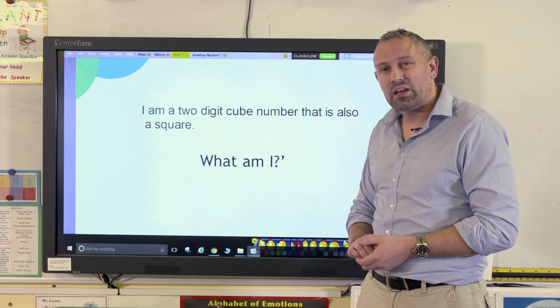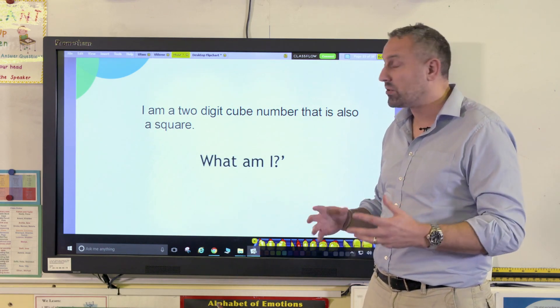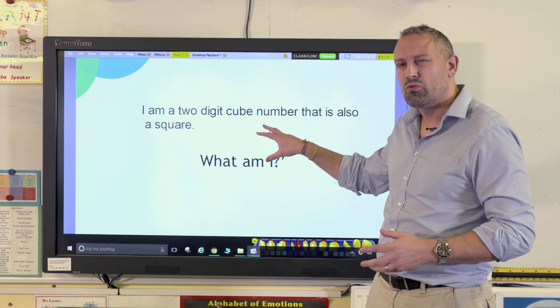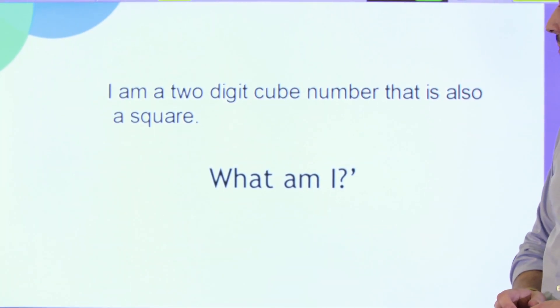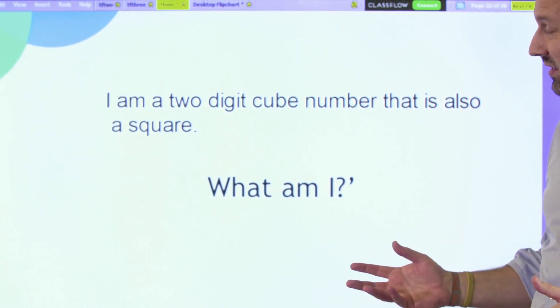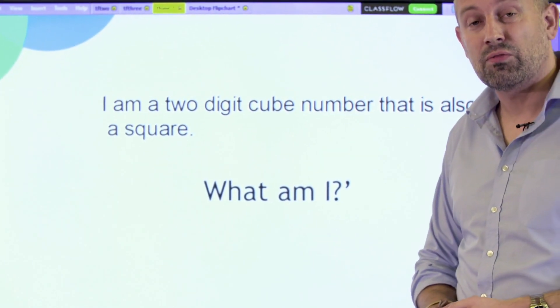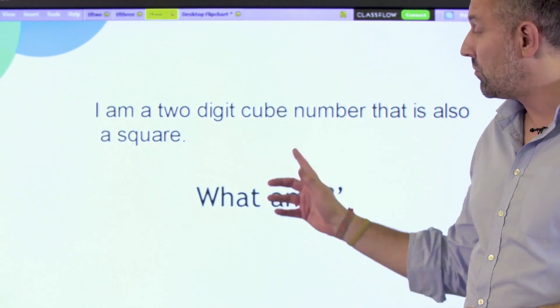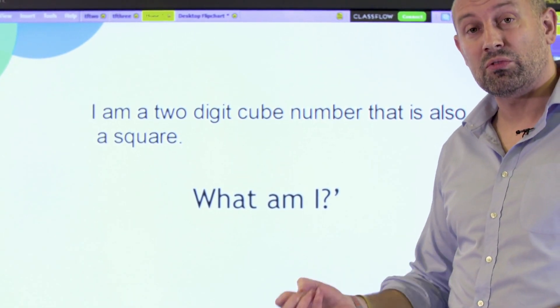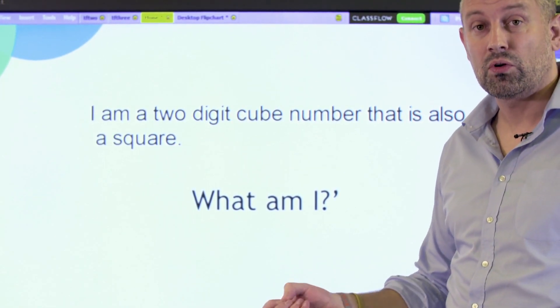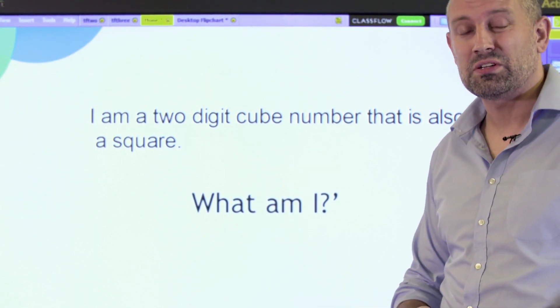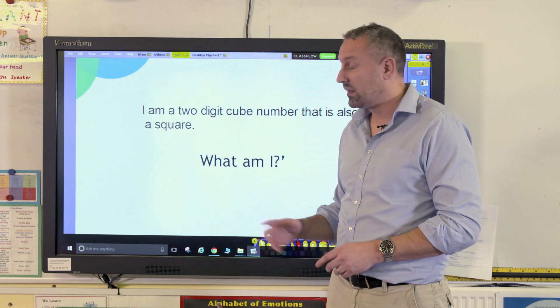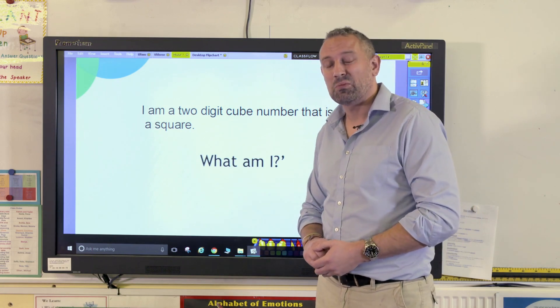And finally, as a challenge for some of the children or for some of your more able children, to have a question like this would really unpick what they knew. So I'm a two-digit cube number that is also a square. What am I? In this case, the answer is 64, because 4 times 4 times 4 is 64—that's the cube—and 8 times 8 is also 64. That's the square number, and that's just the beginning to square and cube numbers.